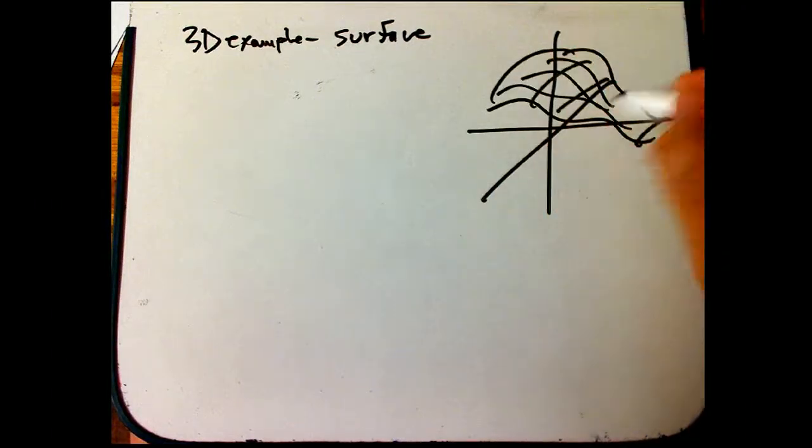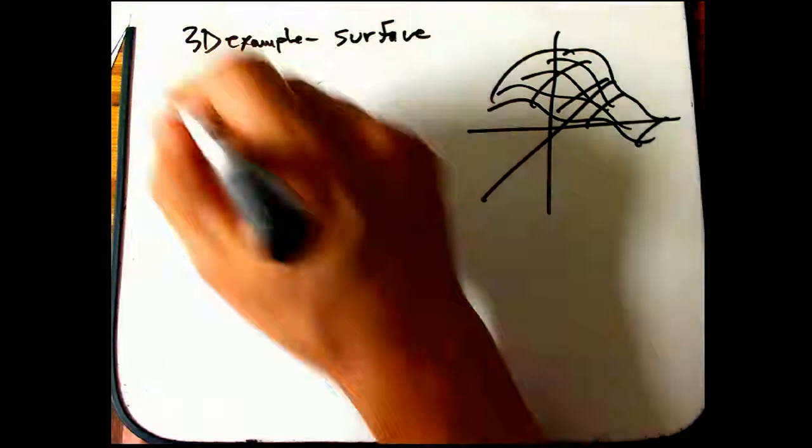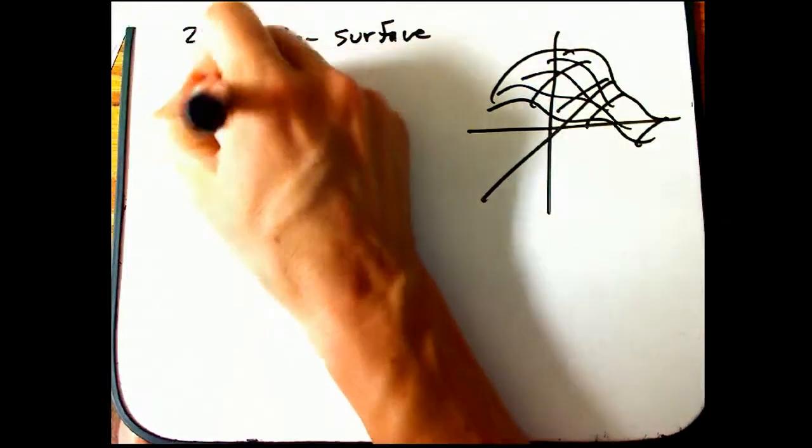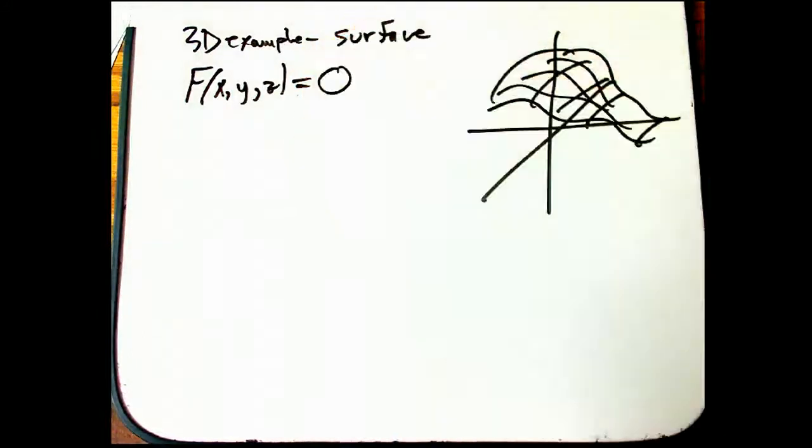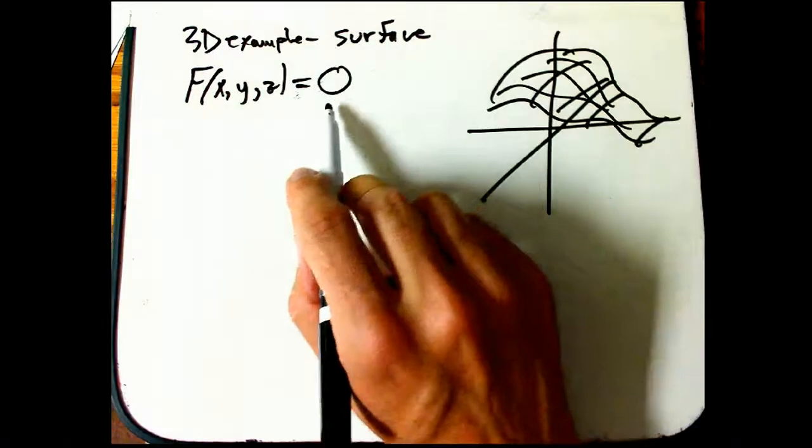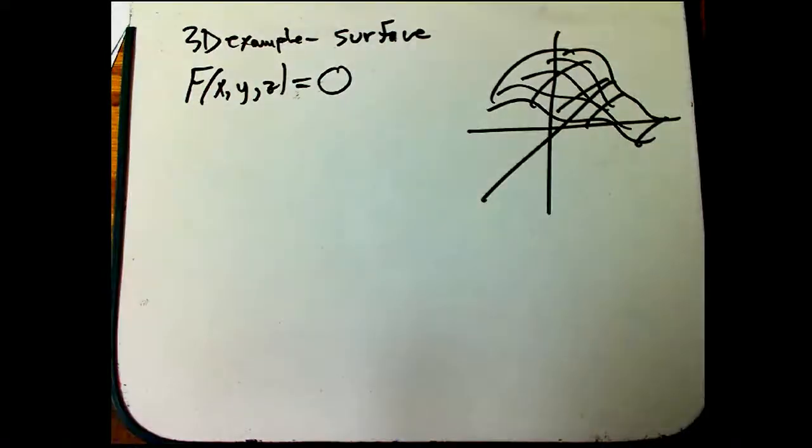But here's the idea. I've got some surface that's defined by one equation and three variables. Let's say equals zero. It's really just inessential that that's a constant, but zero is just simpler.